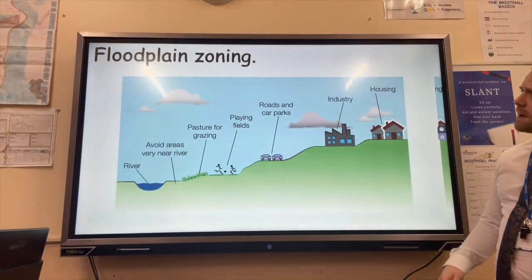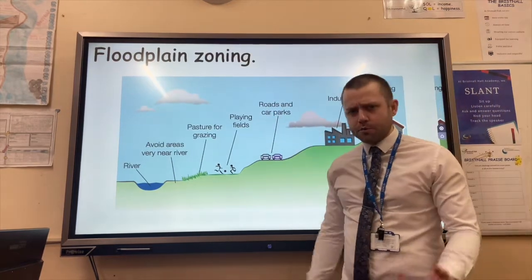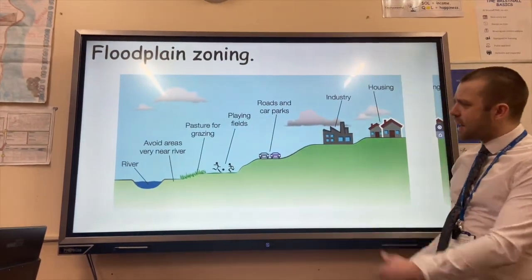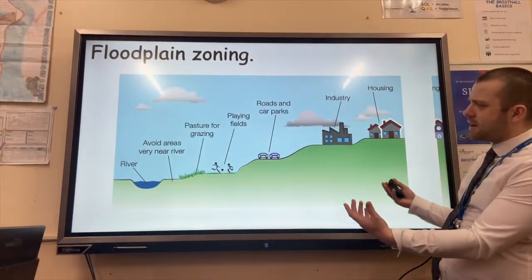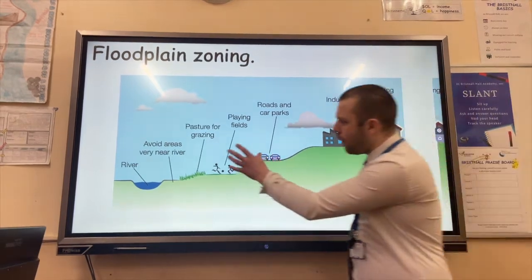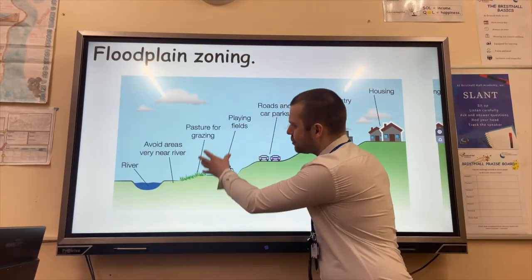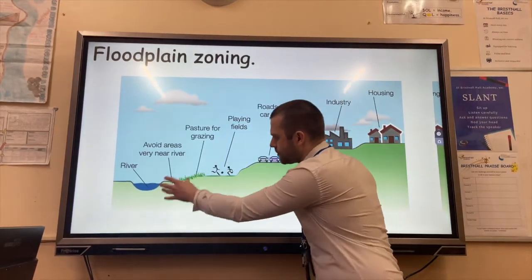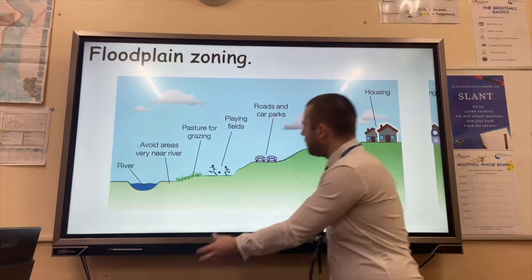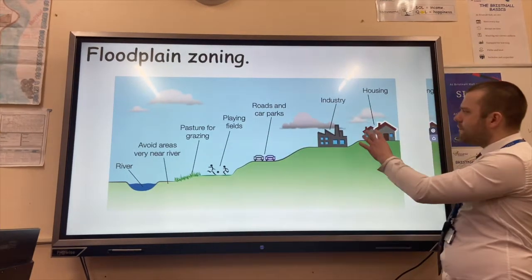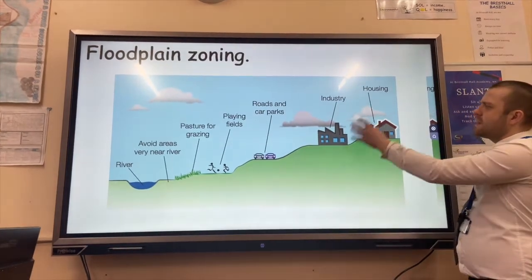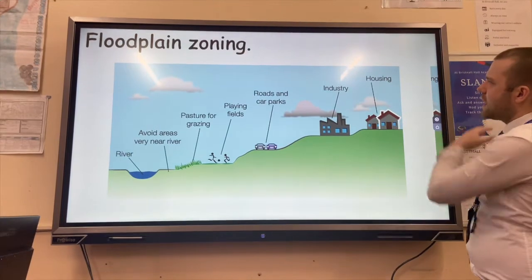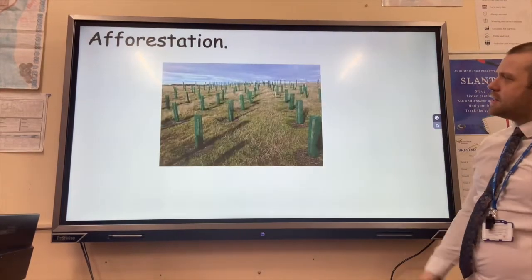The next example is floodplain zoning, sometimes called zonal planning. When planning to build a new town or city, low value land such as pastures for grazing and playing fields are placed close to the river on the floodplain, whereas higher value property such as industry and housing is placed further away.